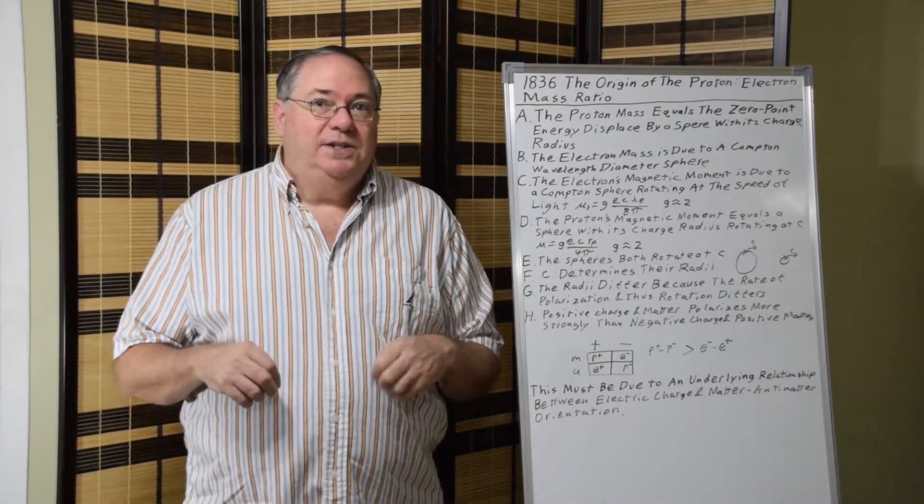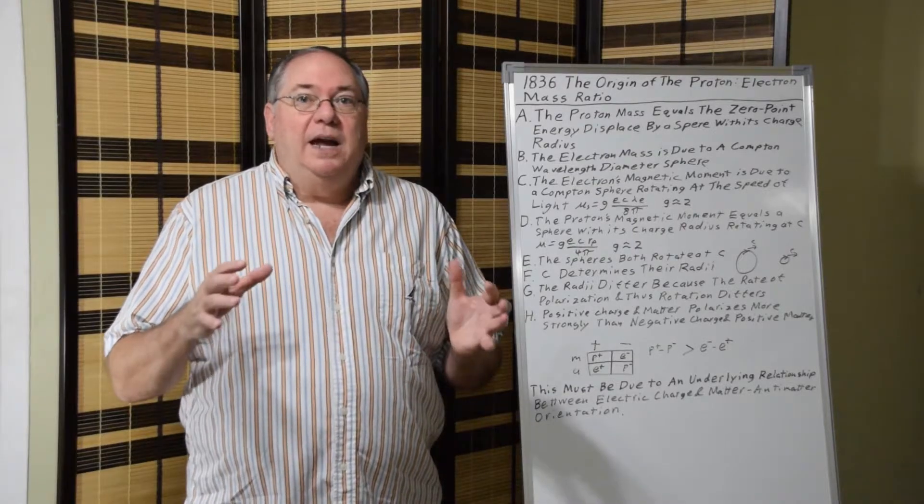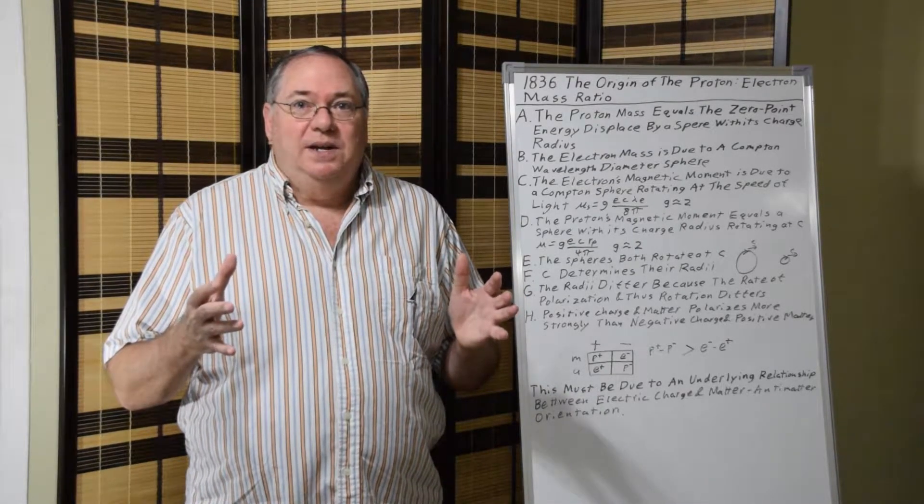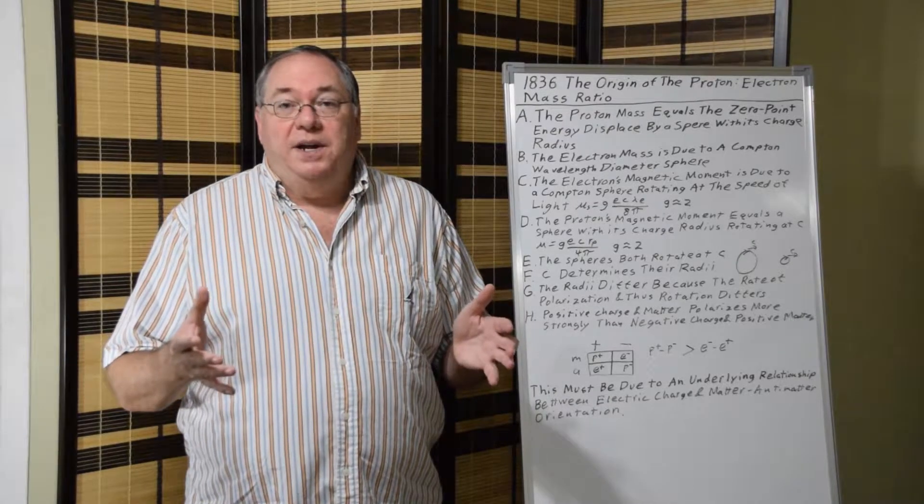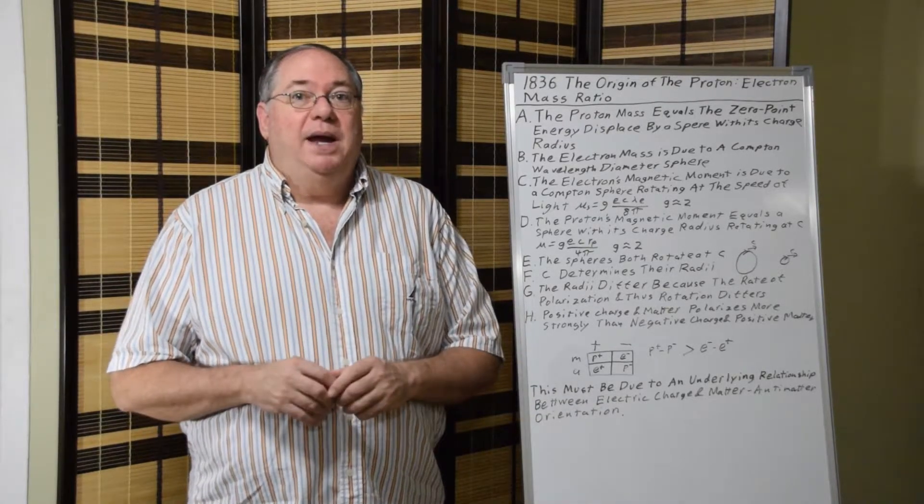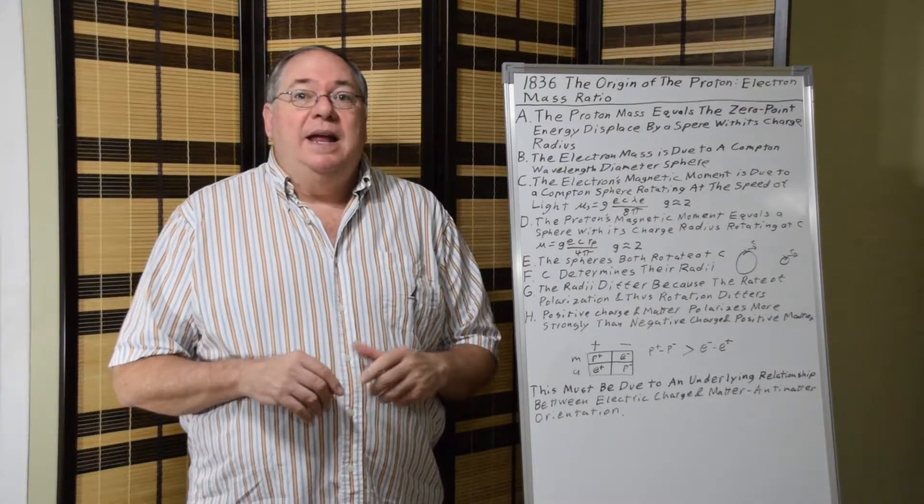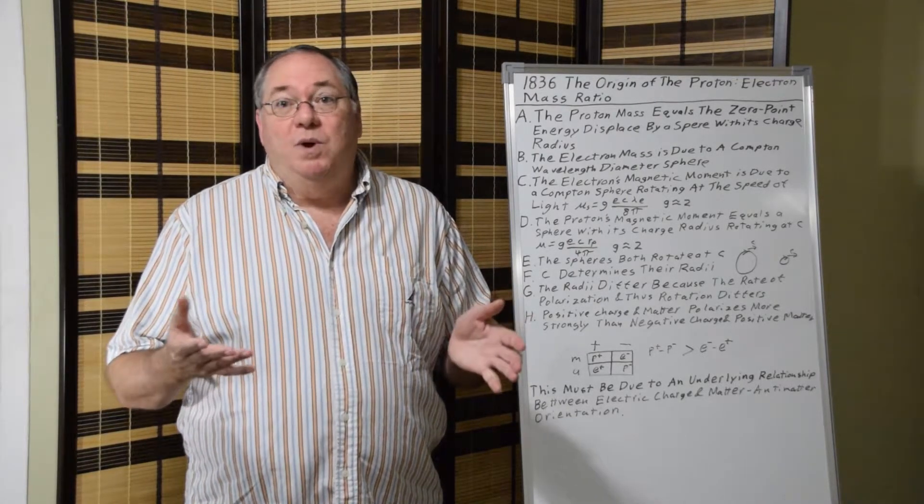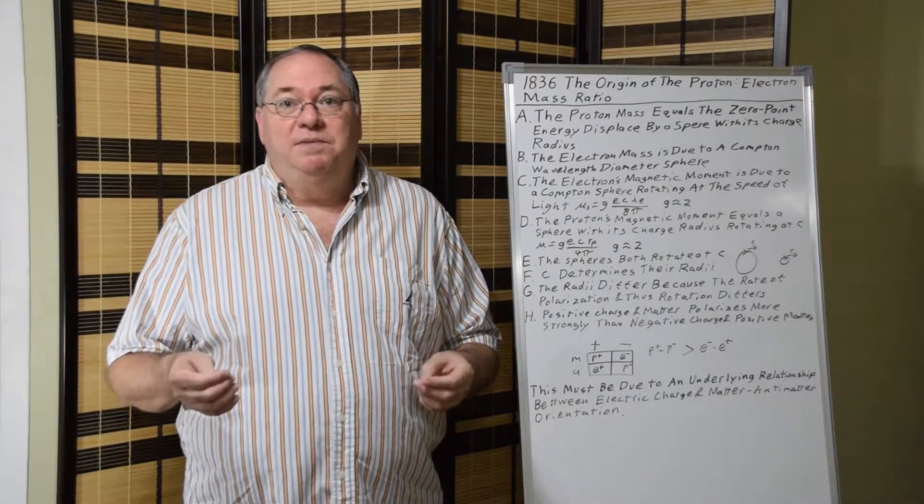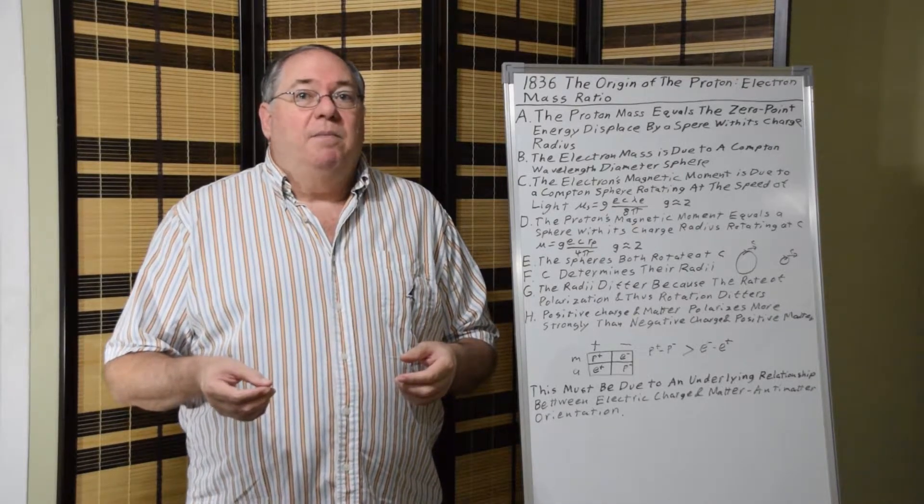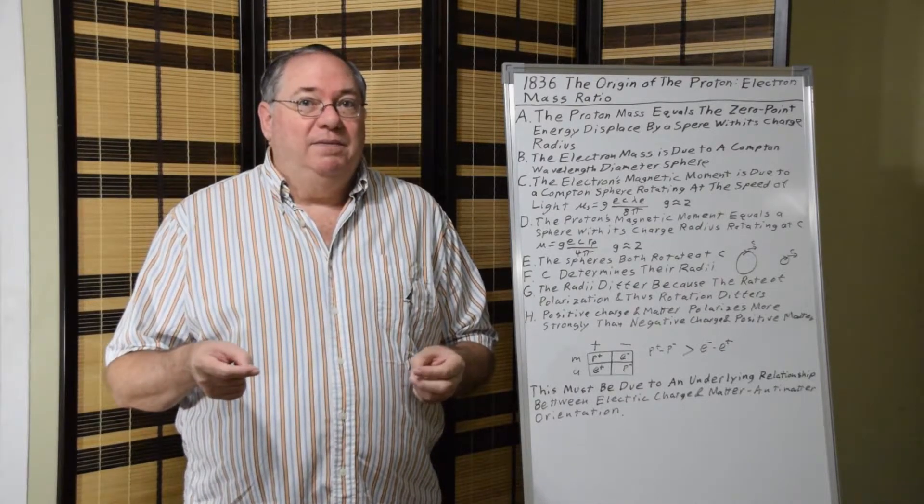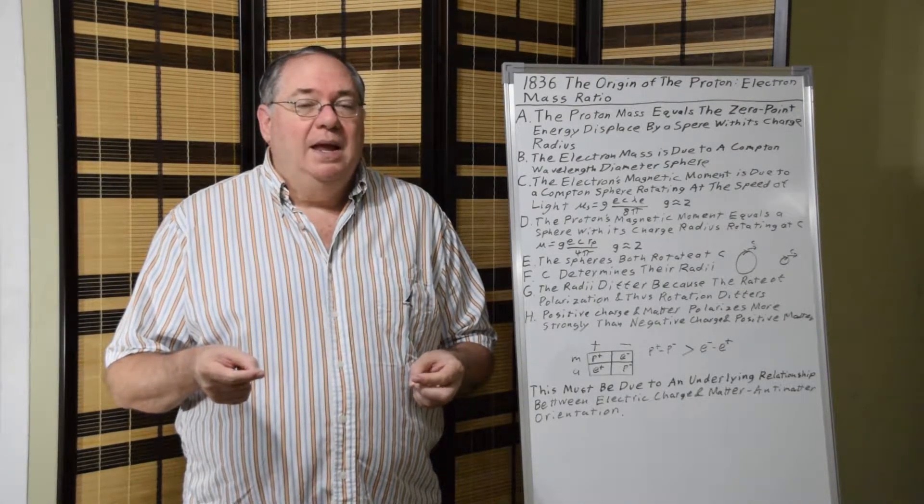Similarly, the electron's the same way. The electron has a quantum field structure that displaces more zero-point energy that gives us the electron's mass. But here, instead of having a radius that's around one femtometer, one times ten to the minus fifteen meters, the radius is half the Compton wavelength of the electron.